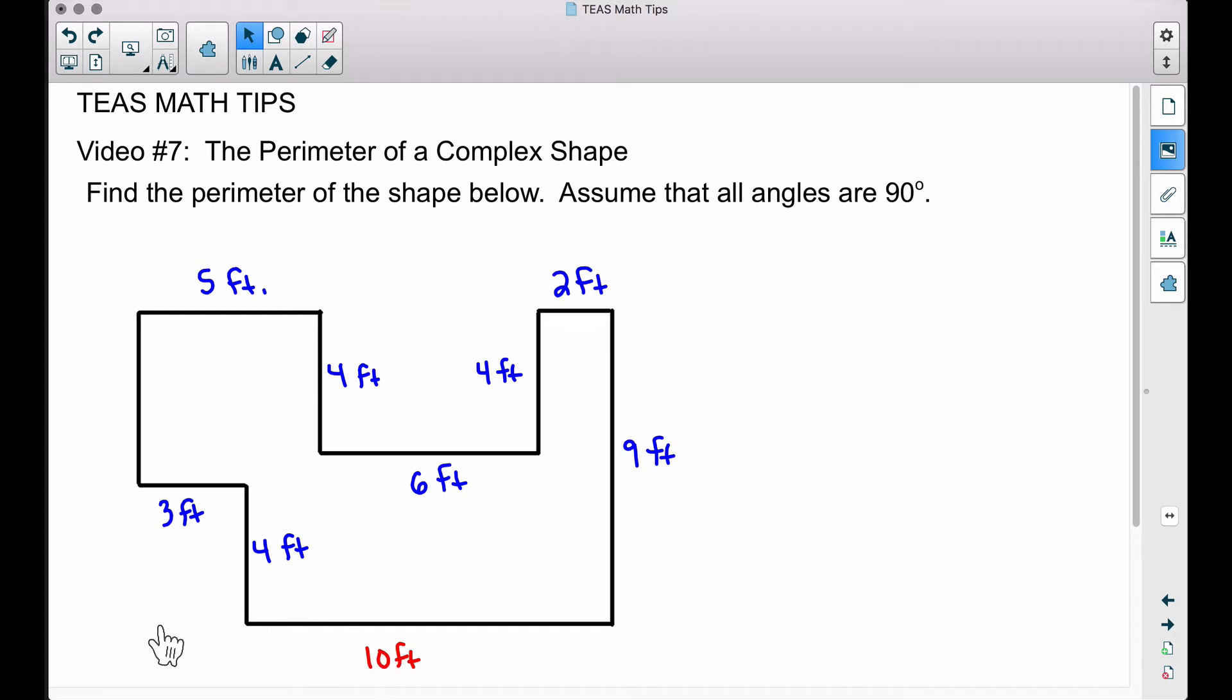So 10 feet plus 3 feet gives us the 13 feet, which is the same thing as the distance from here all the way across. Because remember we have 5, then we have 6, which is matching up with that 6 down there, and then that 2. So 5 plus 6 plus 2 gives us 13 as well. There's that missing side.